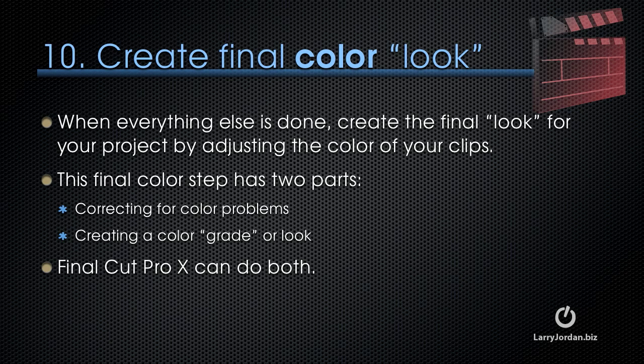Step 10 is to create that final color look. When everything else is done, you create the final look for your project by adjusting the color of your clips. This final color step has two parts: first is correcting for color problems—over exposure, under exposure, camera not white balanced, that kind of thing. The second is to create a color grade or color look. Final Cut Pro 10 can do both.